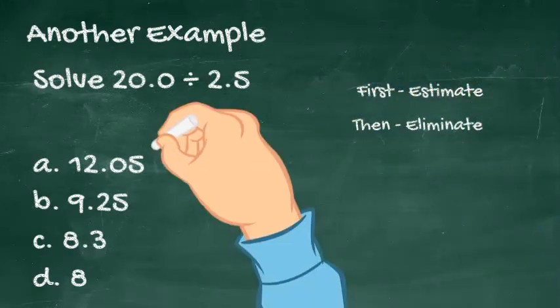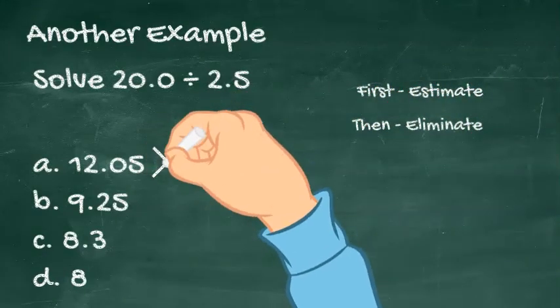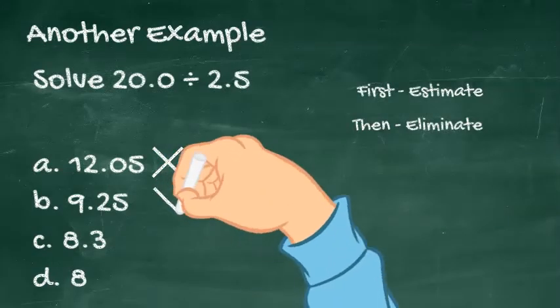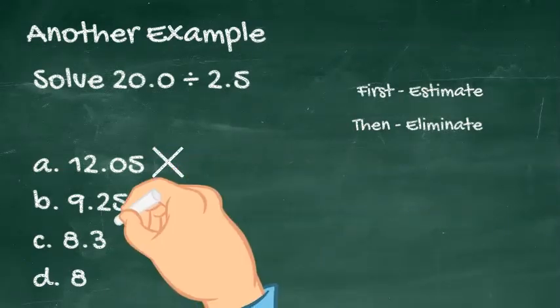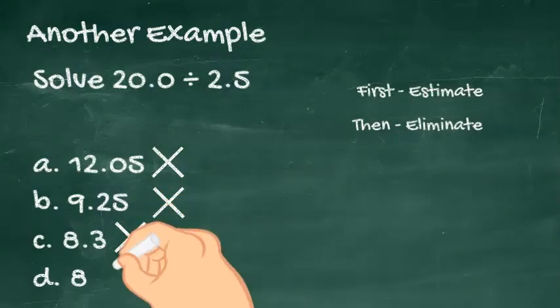First, estimate the answer to be around 10 and eliminate choice A. And since it will also be an even number, you can eliminate choices B and C, leaving only choice D.